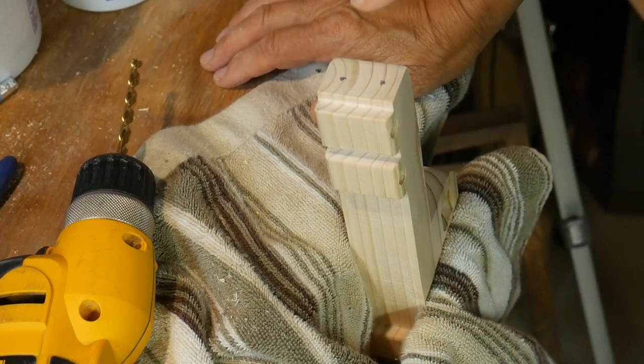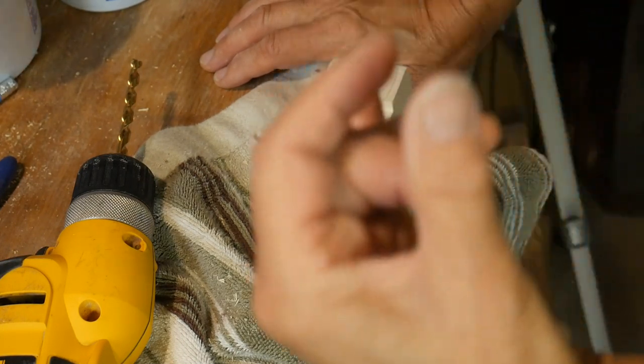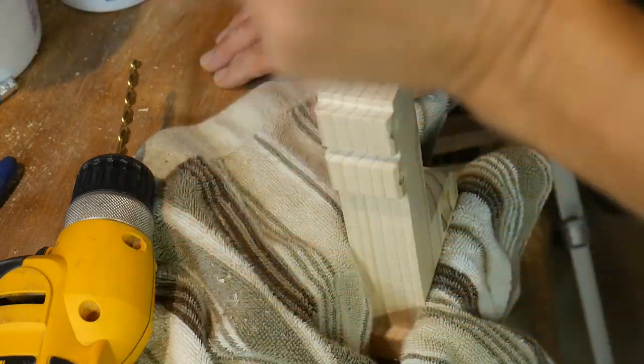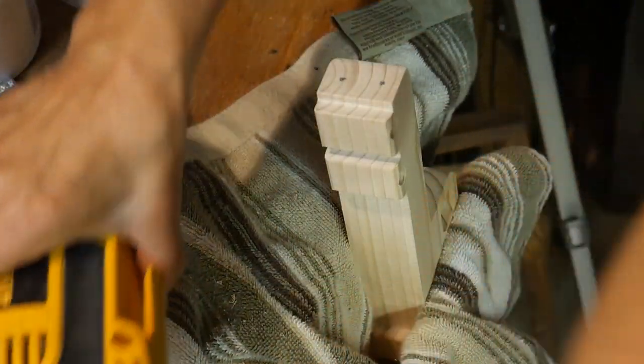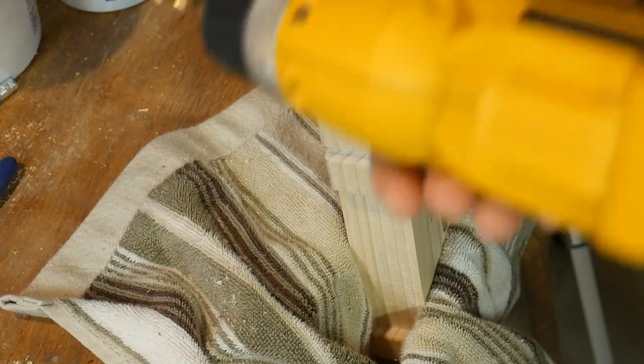I decided I wanted headlights and tail lights but since it's for a little boy I don't want any small little parts so I'm just going to be drilling two little holes to indicate the headlights and tail lights.